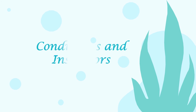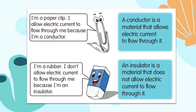We move on to the next topic: conductors and insulators. A paperclip allows electric current to flow through it because it is a conductor. A conductor is a material that allows electric current to flow through it. A rubber does not allow electric current to flow through it because it is an insulator. An insulator is a material that does not allow electric current to flow through it.